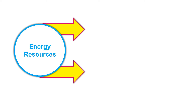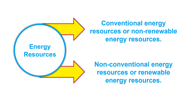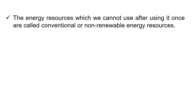The energy resources are of two types: conventional energy resources or non-renewable energy resources, and non-conventional energy resources or renewable energy resources. The energy resources which we cannot use after using them once are called conventional or non-renewable energy resources.